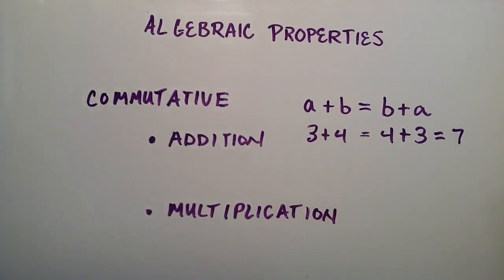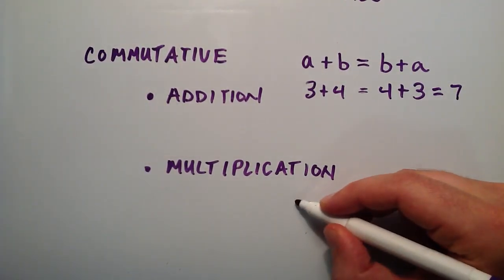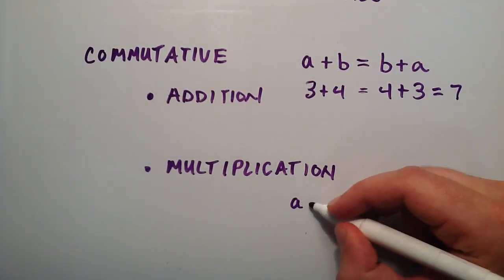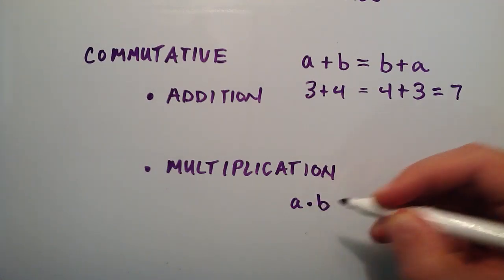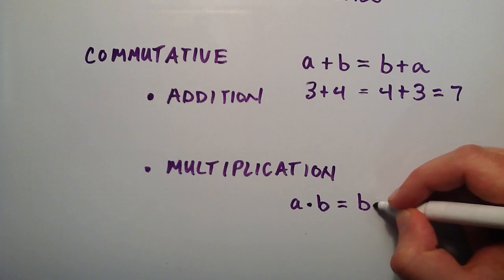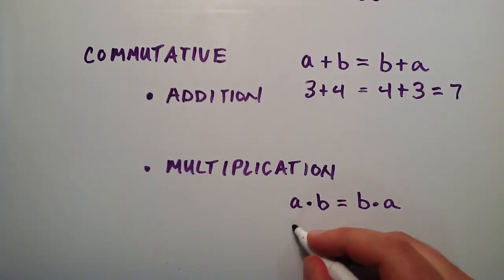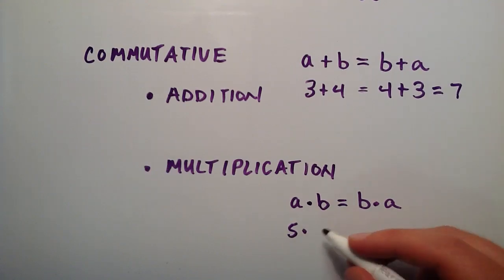The commutative property of multiplication is similar, and says we can do the same thing with multiplication. If we have some number A times some number B, we can commute those numbers and rewrite it as B times A. We could say this time our A is 5 and our B is 4.